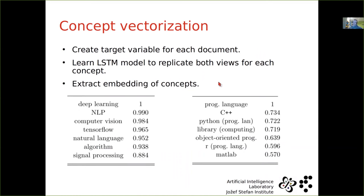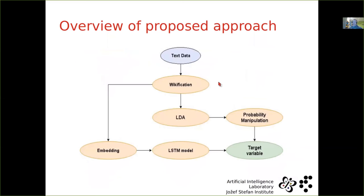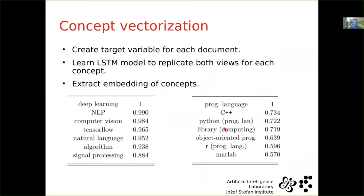So this is this part, if you remember here. So this is the probability manipulation and target variable. And I unfortunately don't have enough time to go into how target variable is created, but I will just present the embedding results.